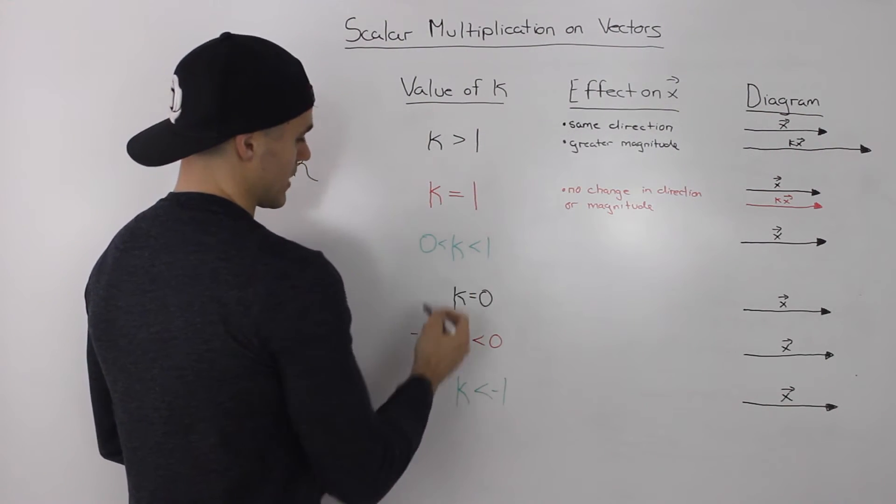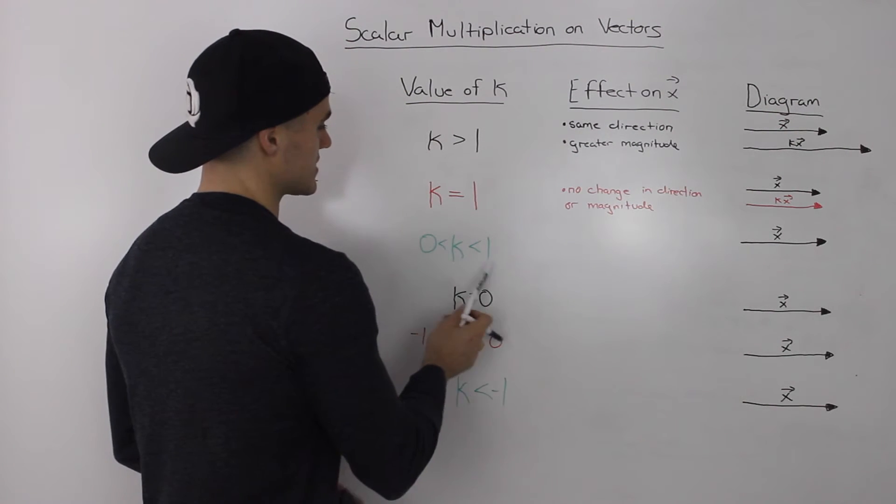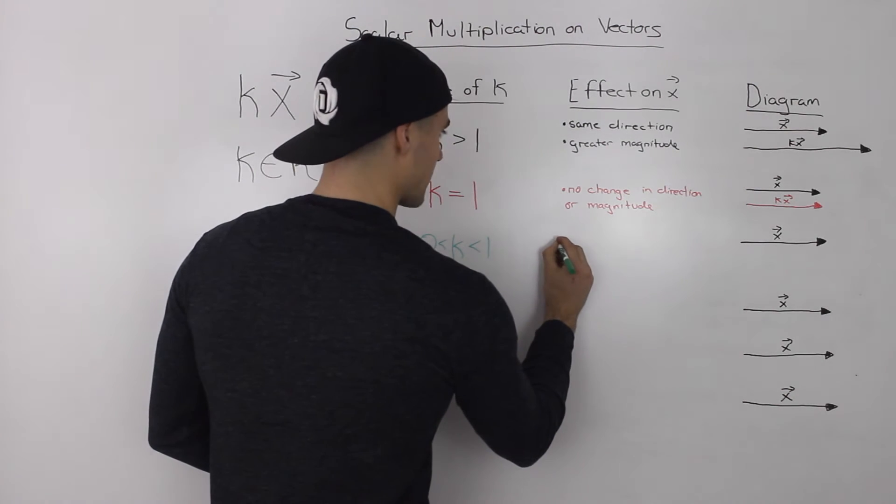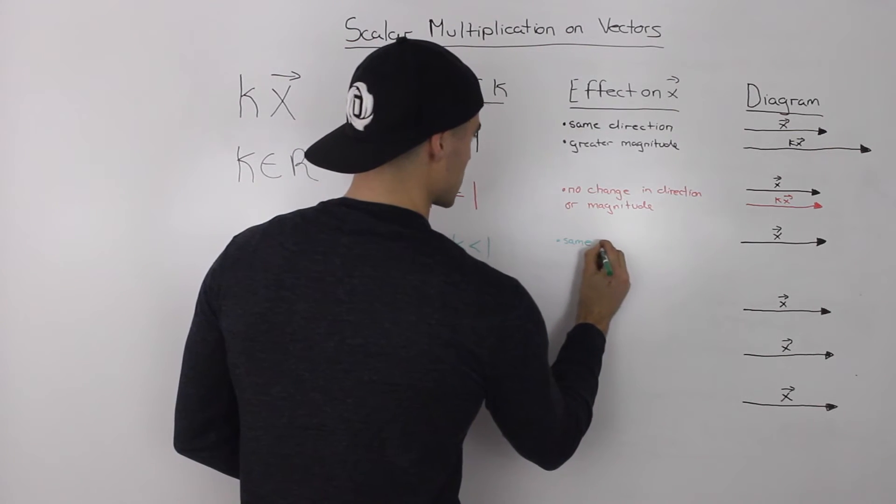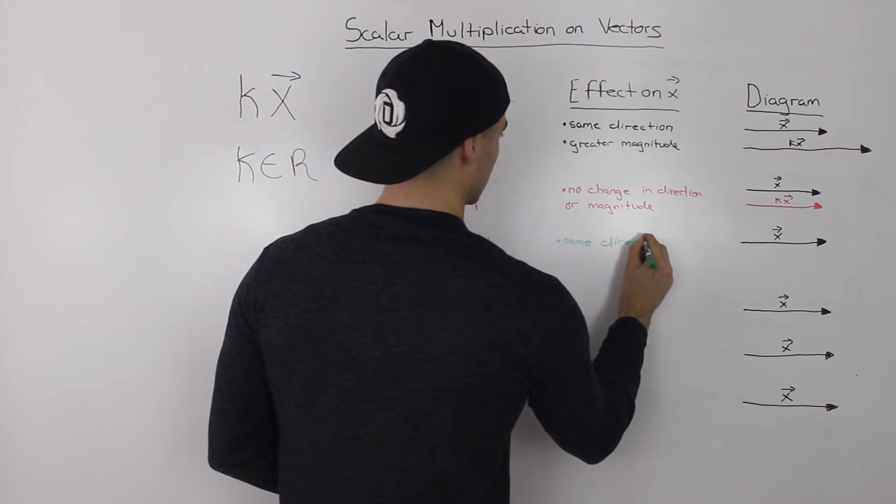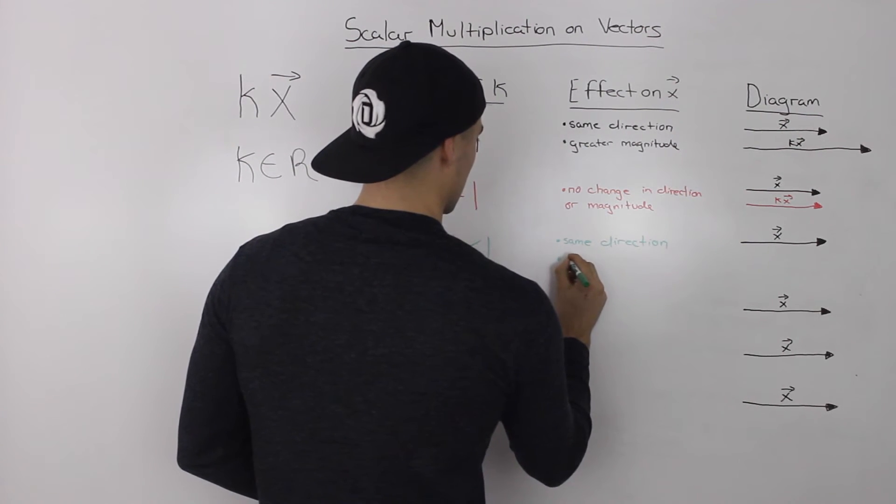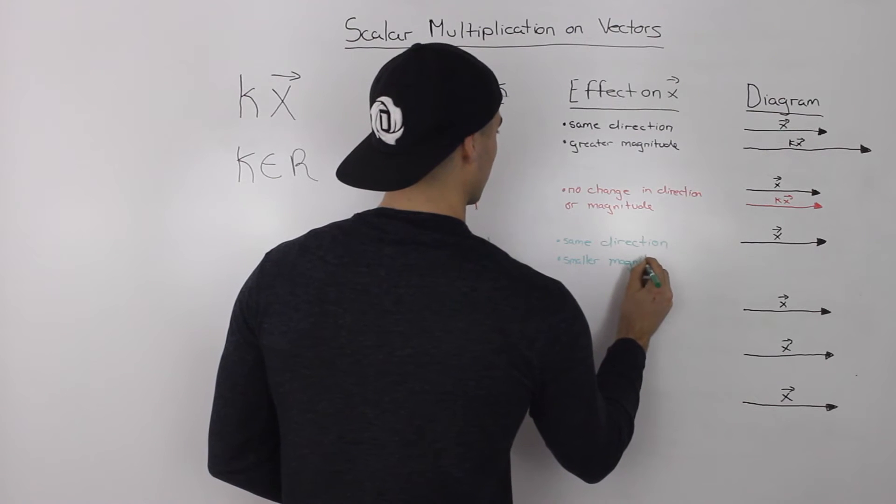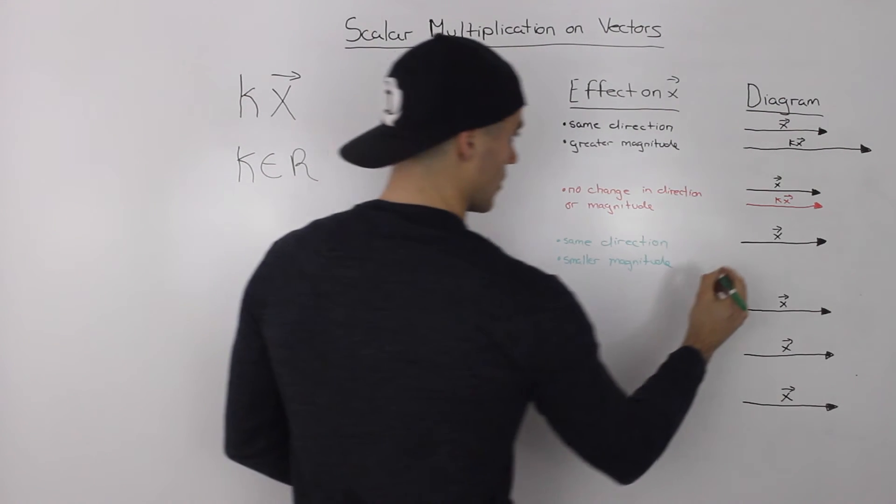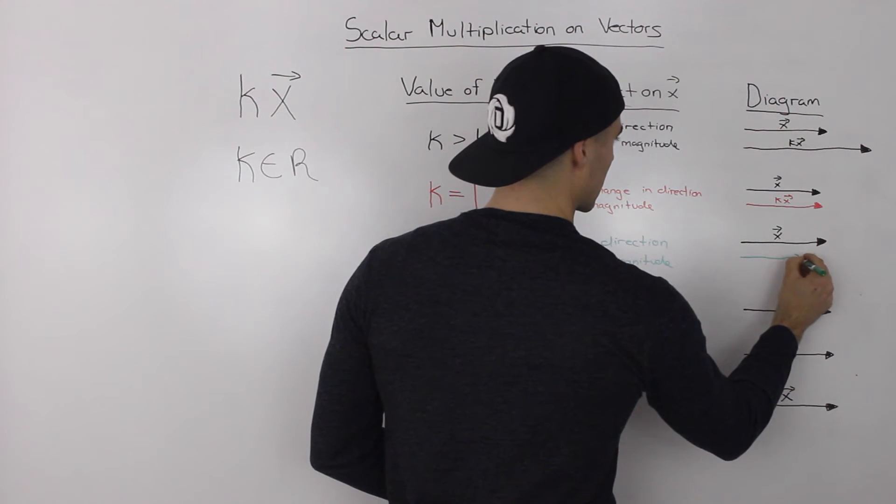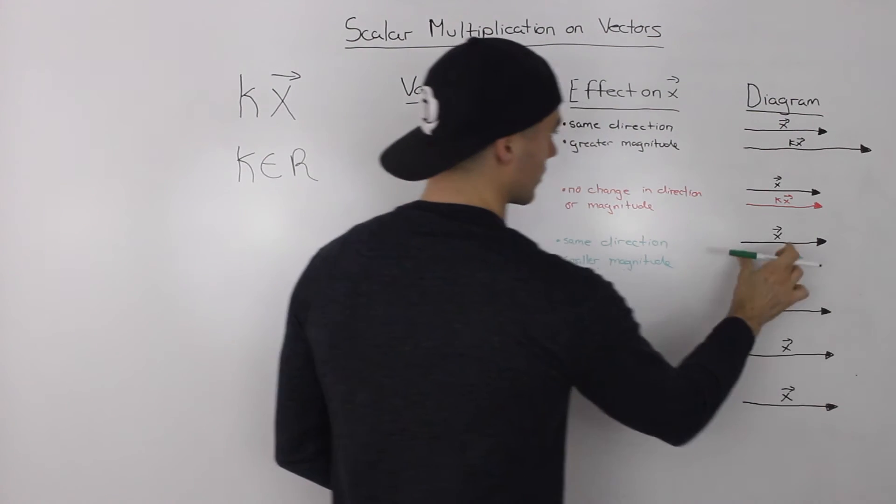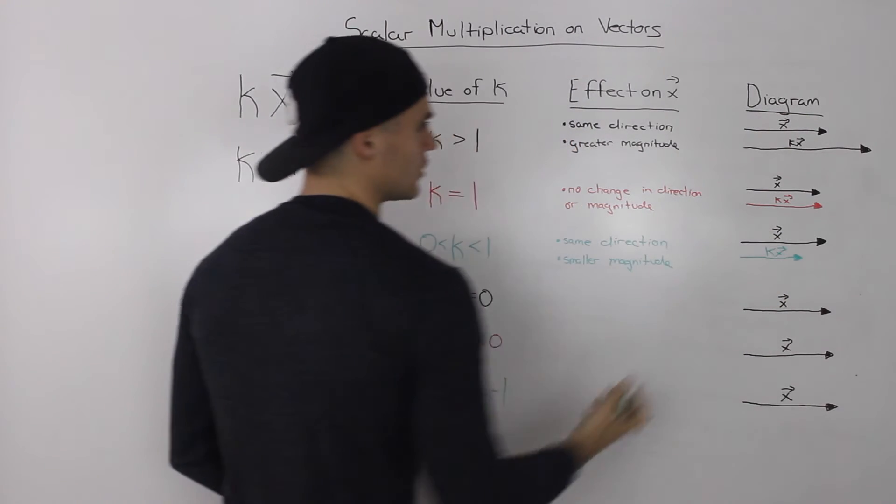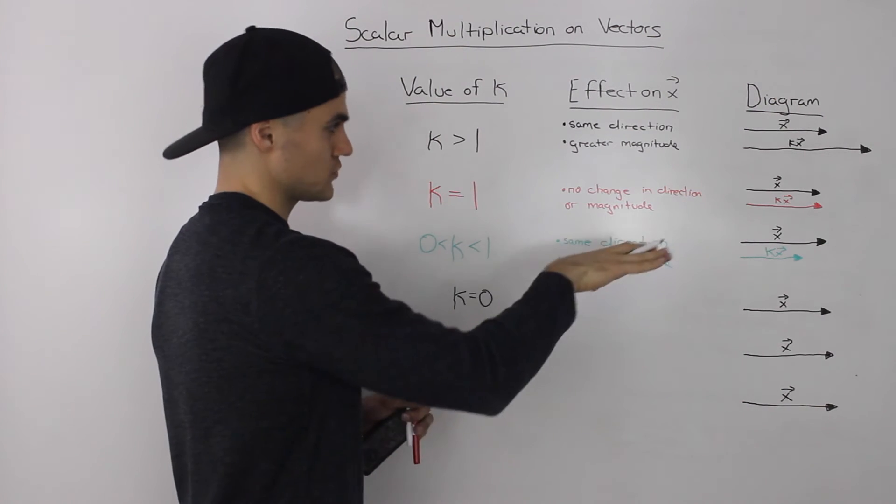Now what if we multiply it by a positive number that's in between zero and one? So usually some kind of fraction. Well, what would happen is you'll end up with the same direction. However, you'll have a smaller magnitude. So if you multiply the original x vector by one half, the direction will stay the same, but the magnitude will be half of the original.